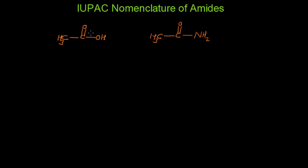In the previous video, we learned about the introduction of amides and its classification such as primary, secondary, and tertiary amides. In this video, I am going to focus on the IUPAC nomenclature of amides. Before going to the IUPAC nomenclature of amides, we will start with the common naming of these compounds. This is CH3C double bond O OH, and the common name of this compound is acetic acid.